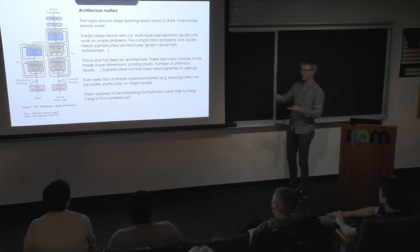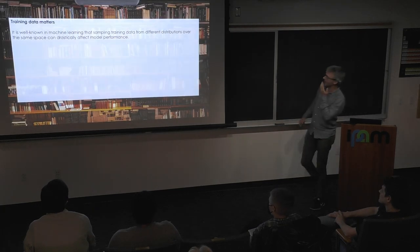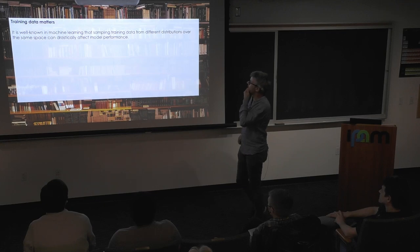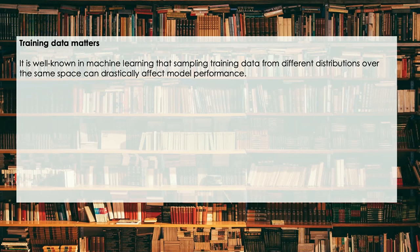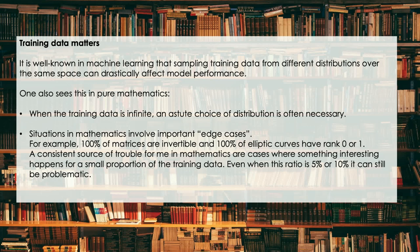Learning rate is step size in gradient descent. So training data matters. How the training data that you give to the machine is extremely important. We'll see a really striking example of this in a second, but if your training data is infinite, you have to be aware that you might need to make an astute choice of distribution. And that distribution can often be rather subtle. And this is something that bites me all the time.